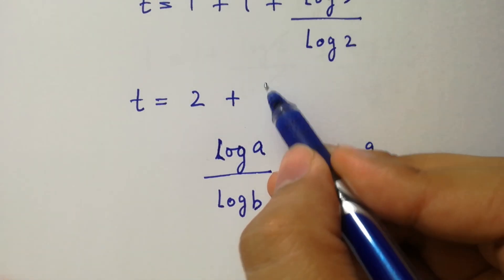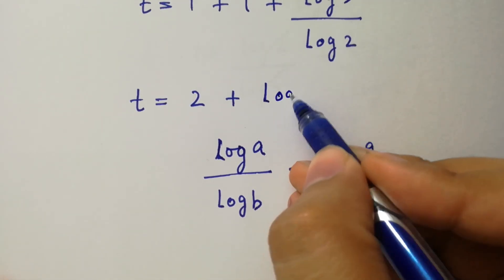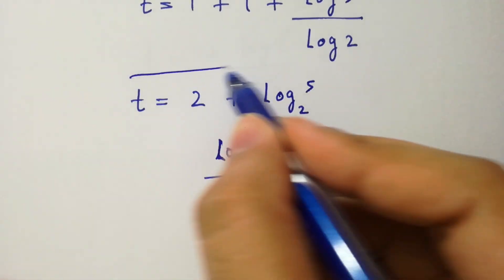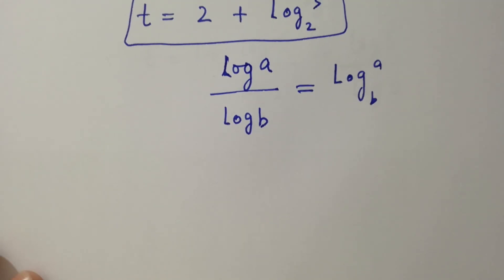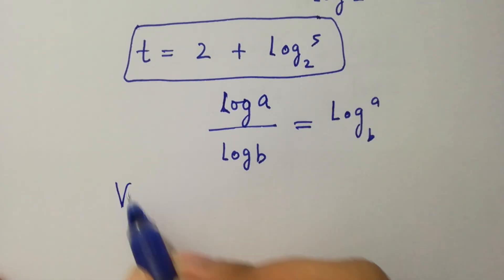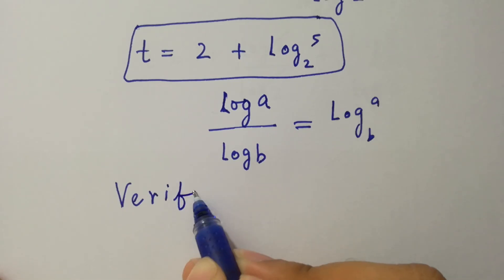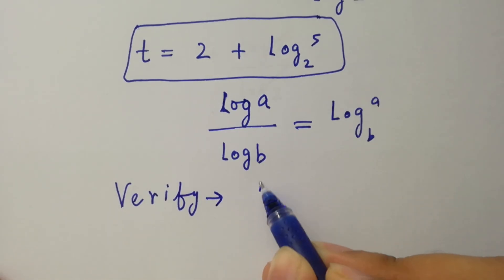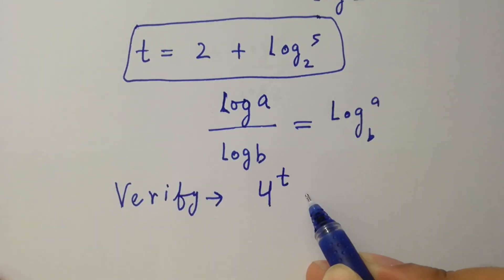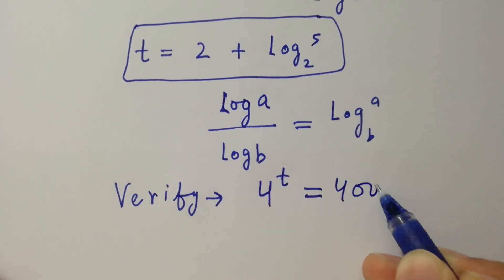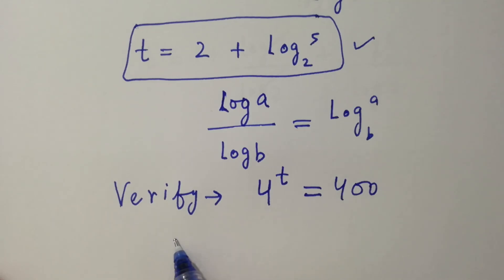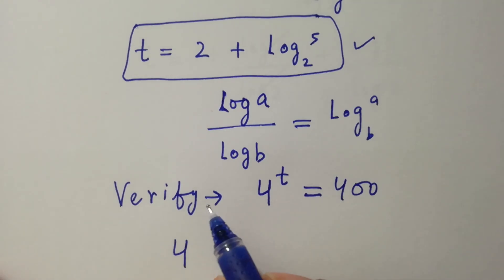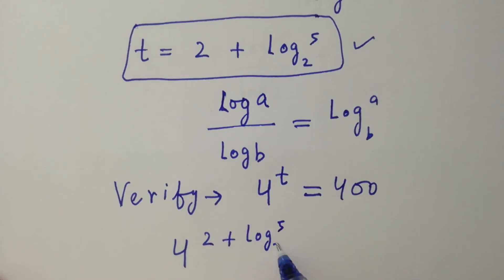it will be t equals 2 plus log 5 to the base 2, which is the value of t. In the next step I am going to verify. We put the value of t into 4 to the power t equals 400, so we have 4 to the power t is 2 plus log 5 to the base 2, equal to 400.